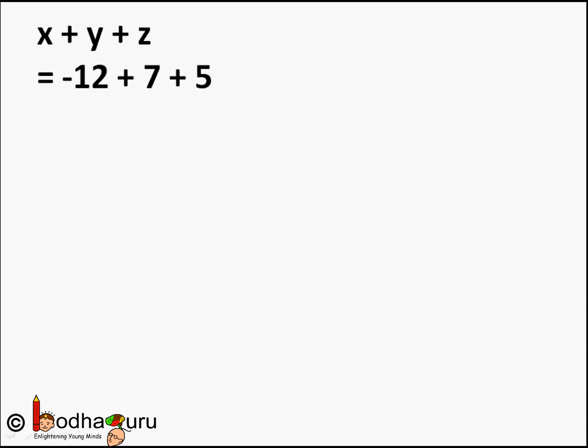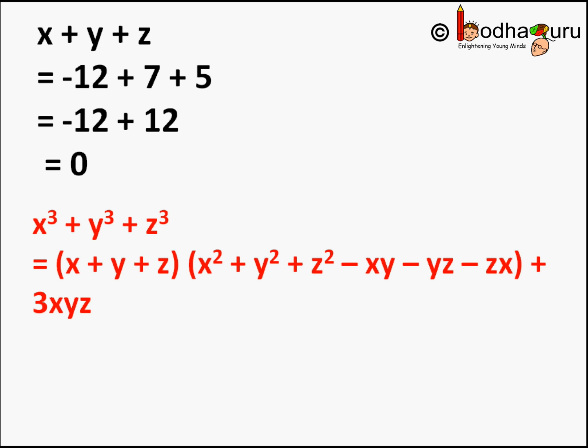Now solve. First resolve the first term. Look, x + y + z equals -12 + 7 + 5, which equals -12 + 12, which equals 0. So (x + y + z), which is 0, times (x² + y² + z² - xy - yz - zx)—this whole term becomes 0. Zero times anything is 0.